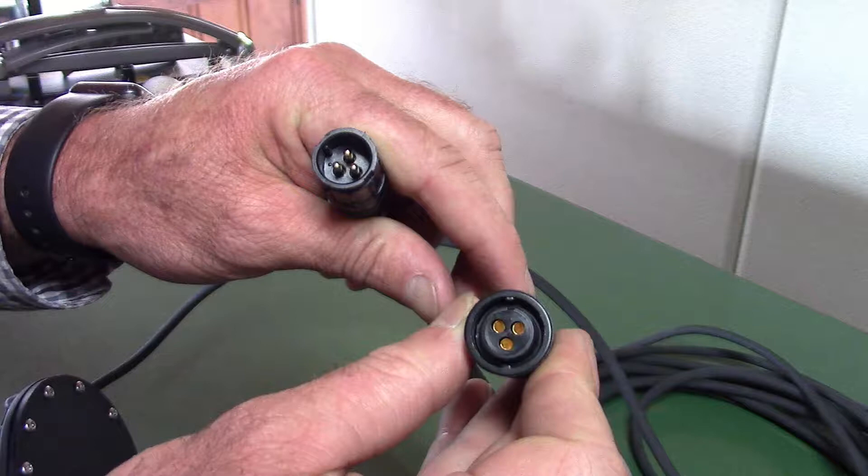If you're getting the correct voltage from the rate controller, you need to have 5 volts from power to ground, and then 5 volts from signal to ground.